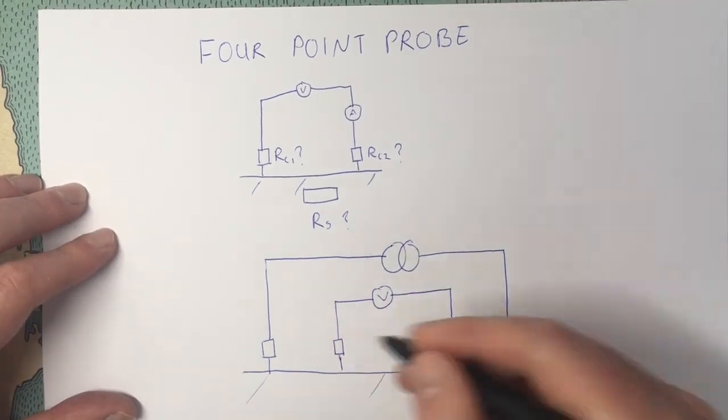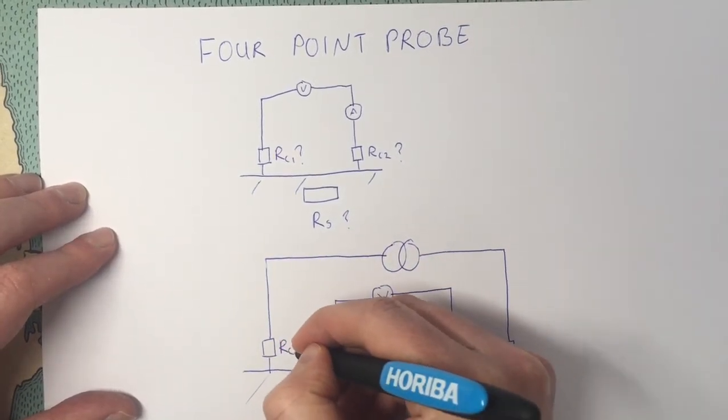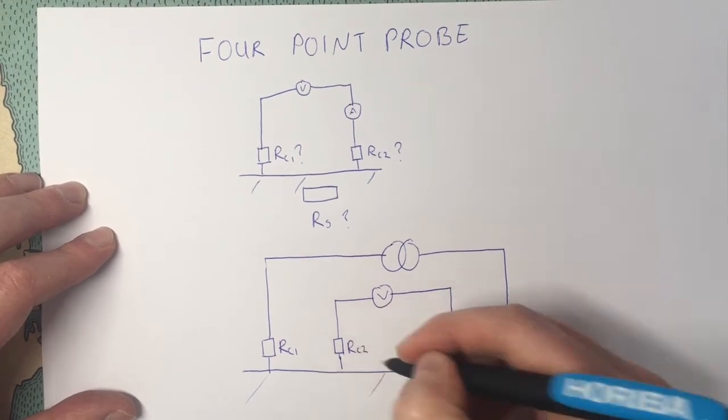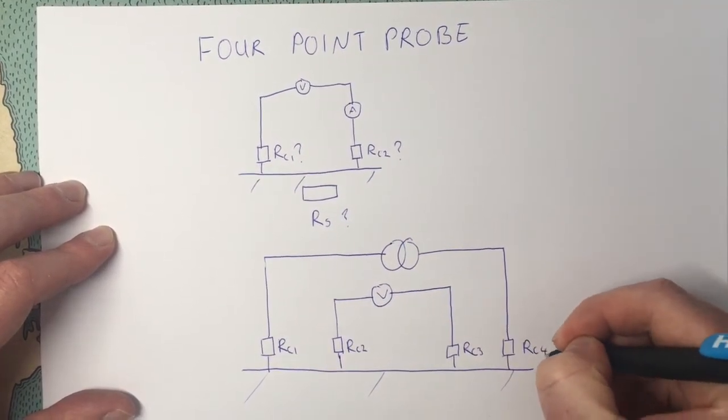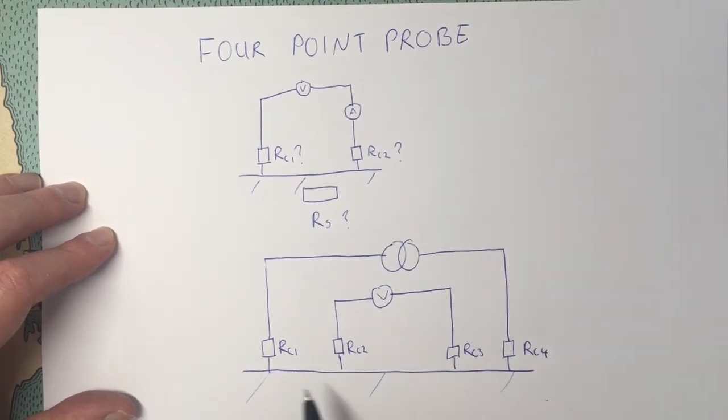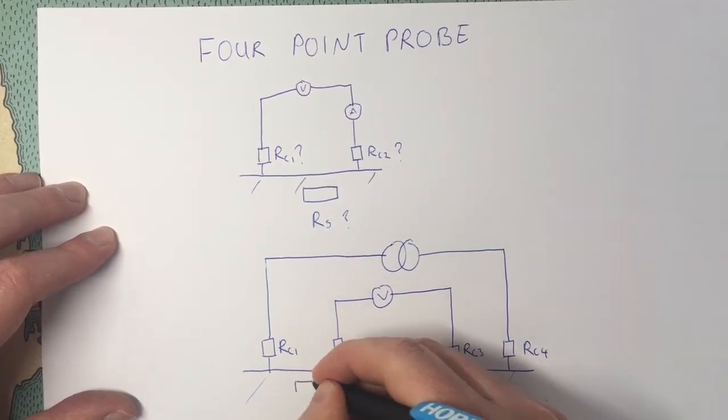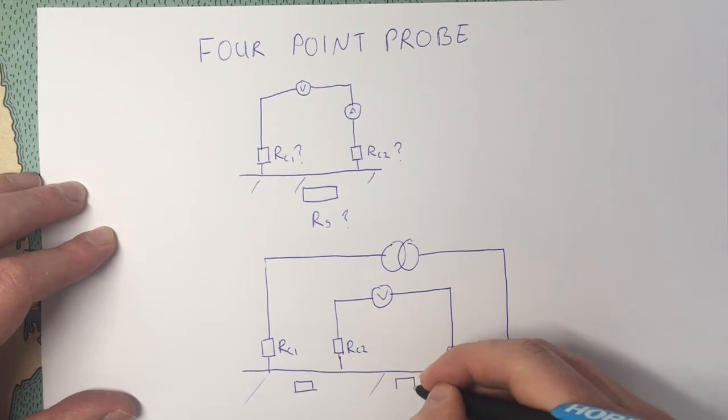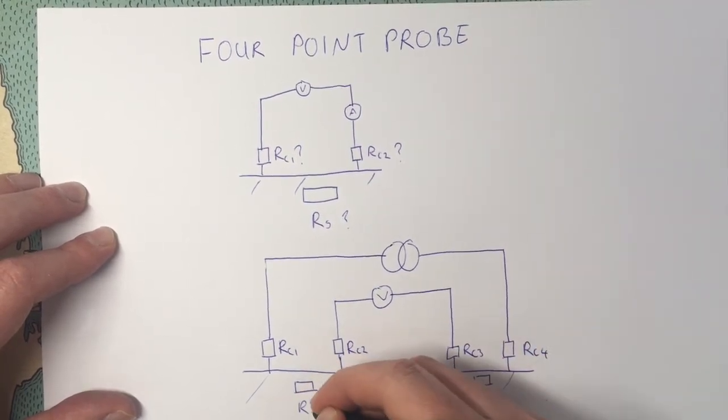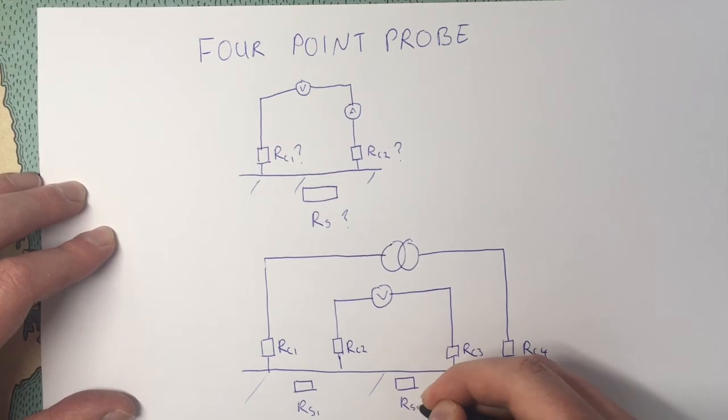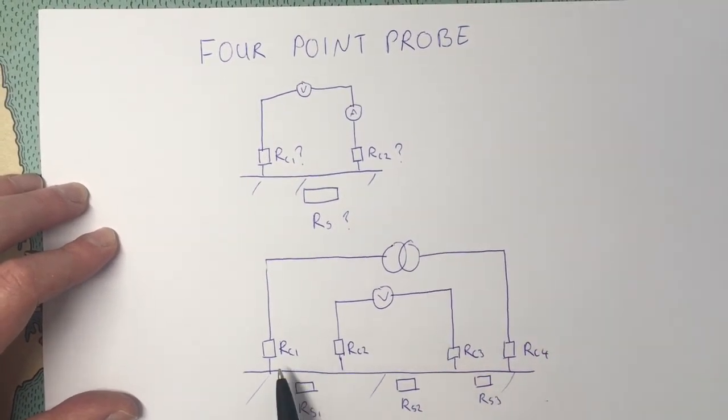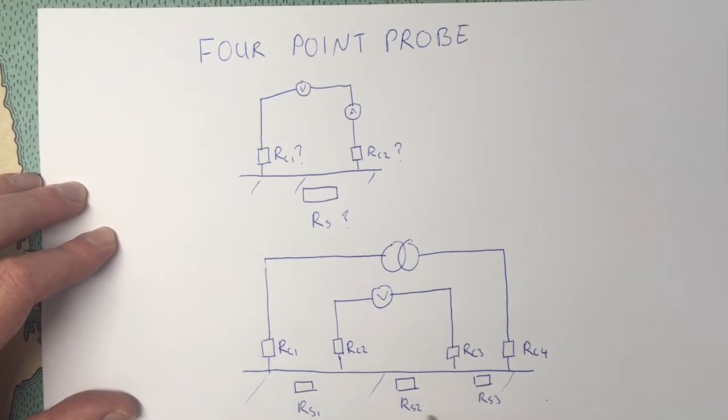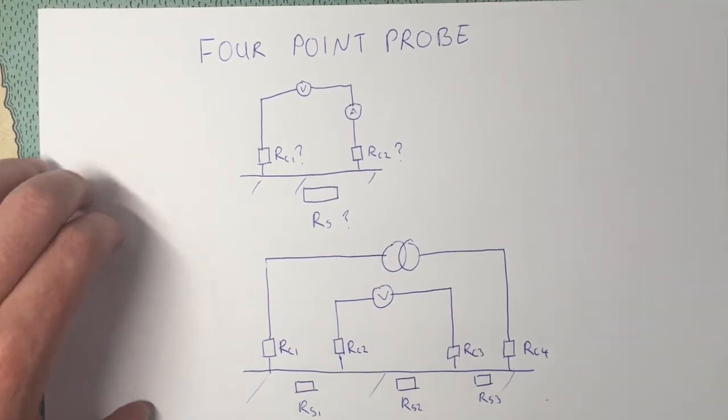So we have got these four contact resistances: RC1, RC2, RC3, RC4. And then we have got three sample resistances. If these are all evenly spaced, then these sample resistances will be the same.